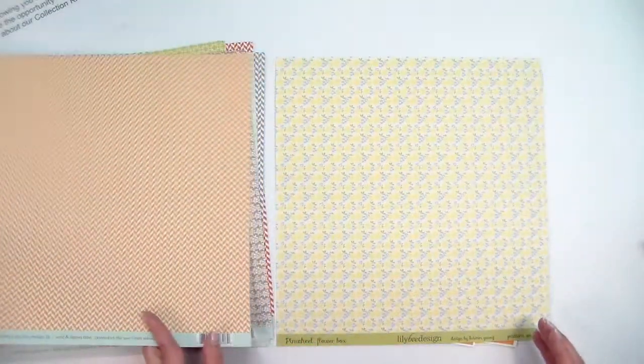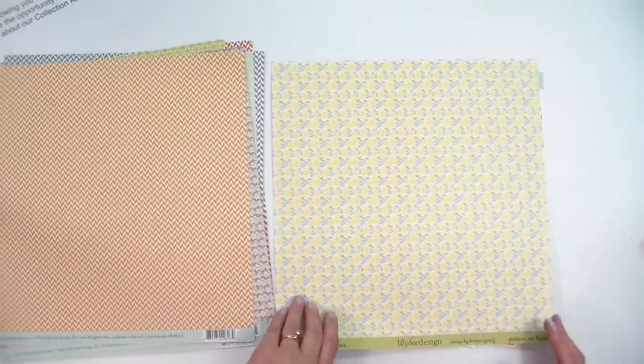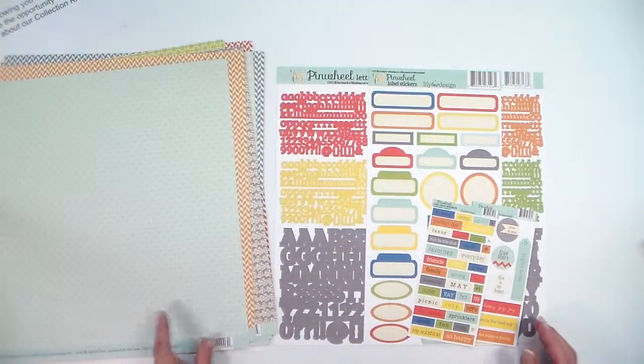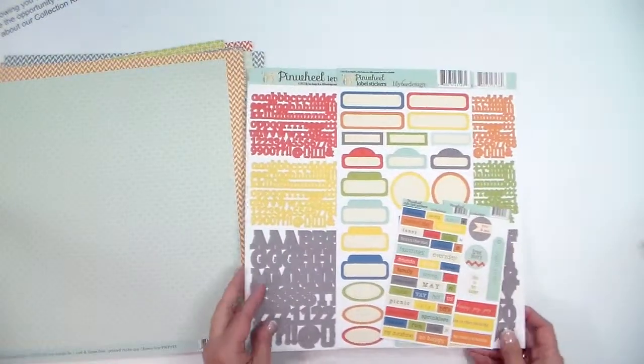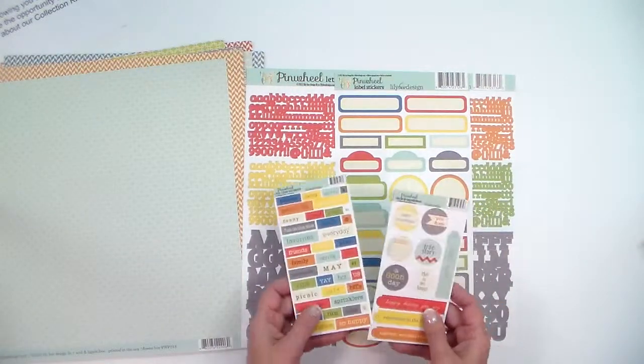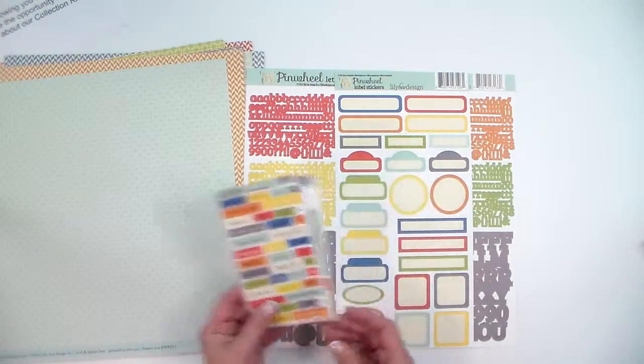We're almost done with the paper here for this line. It's a cute little line from Lily B. Now we've got some little stickers here that come with this. Here's two little stickers.